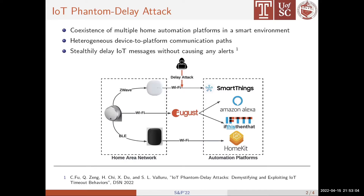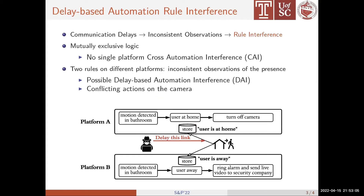Based on the phantom delay attack, we find that inconsistency and disordered messages can be exacerbated by attackers to elicit new cross-rule interference tags that can bypass existing detections. We call this delay-based automation interference, or DAI attack.